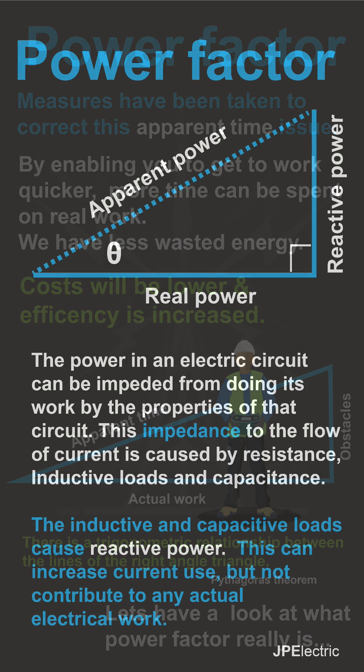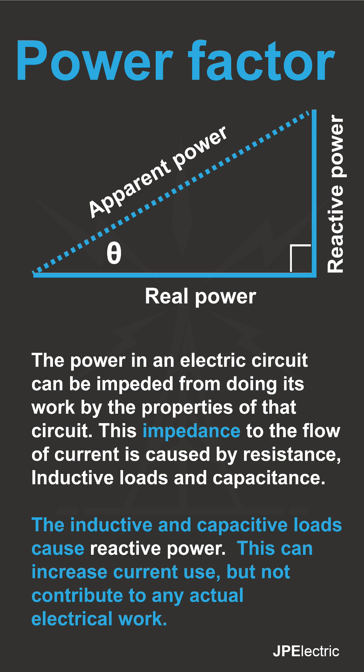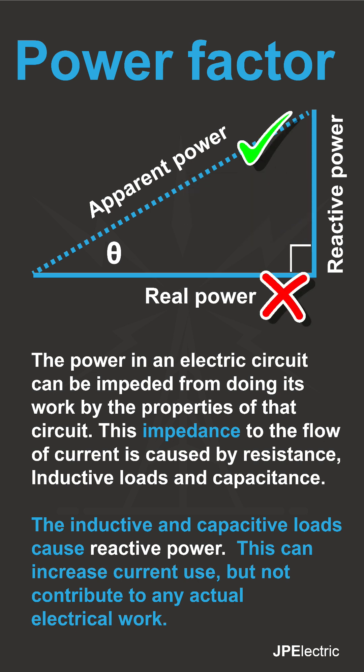Power in an electric circuit can be impeded from doing its work by the properties of that circuit. This impedance to current flow is caused by resistance, inductive, and capacitive loads. It's the inductive and capacitive loads that cause what's known as reactive power, which can actually increase current use even though that current is not directly involved in any actual electrical work.